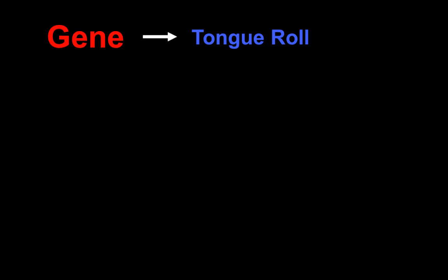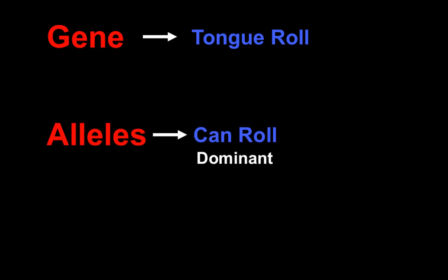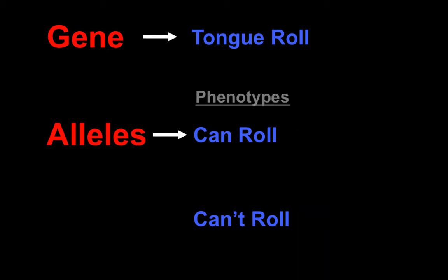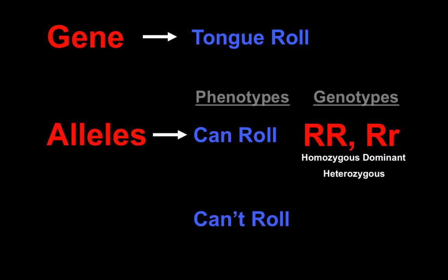Bringing this all together: our gene is tongue roll. Our alleles are can roll, which is dominant and uses big R, and can't roll, which is recessive and uses little r. The phenotypes are whether you can physically roll or cannot physically roll your tongue. For genotypes: homozygous dominant and heterozygous both give the dominant phenotype, while homozygous recessive gives the recessive phenotype.